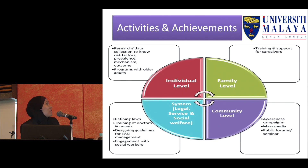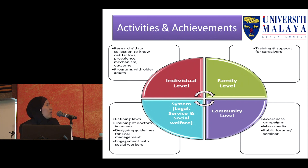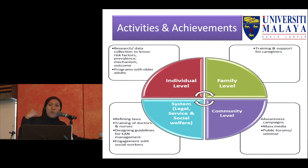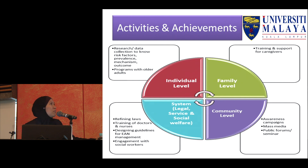These are some of the activities and achievements. If you look at the ecological model, you have to work at multiple levels simultaneously. At the individual level, we focus on research. Starting in 2014, we interviewed around 2,000 older adults aged 60 and above in rural Malaysia. We have obtained prevalence data, identified risk factors of elder abuse, and there are intervention studies currently ongoing. We're still waiting for those results.